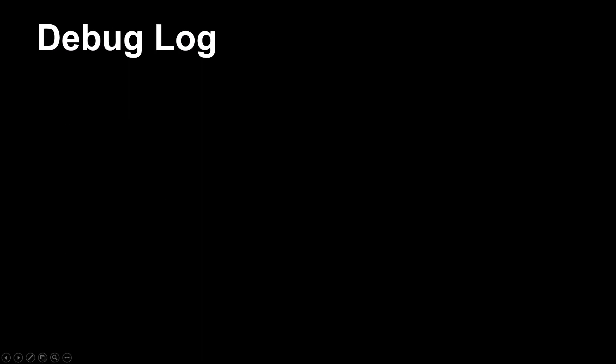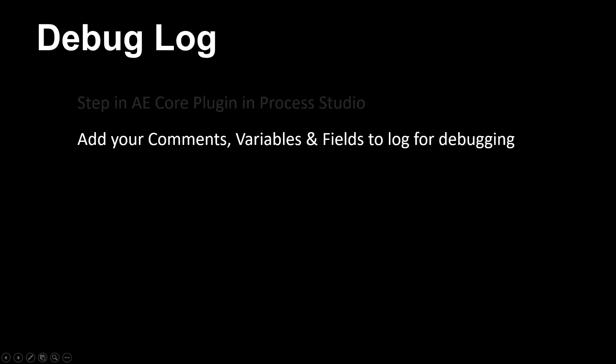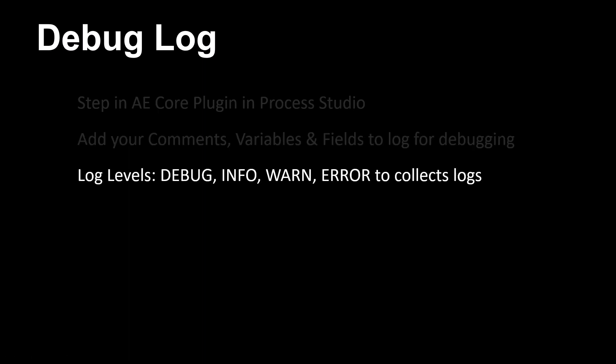Let us describe the debug log step. The debug log is a step in the Automation Edge core plugin in Process Studio for use in workflows. You can add your comments, variables, and fields to the step to log for debugging. You can select from the log levels — debug, info, warn, or error — to collect logs at the level selected here or at a higher level of severity.